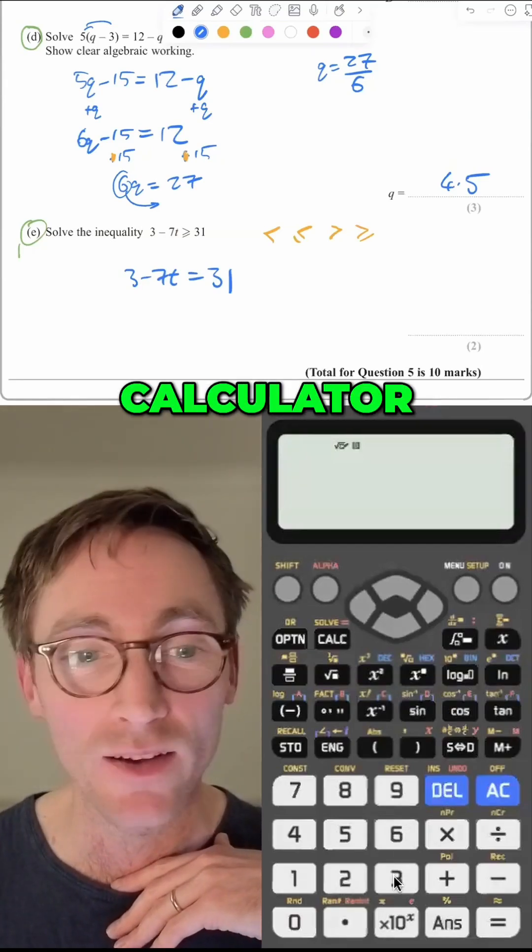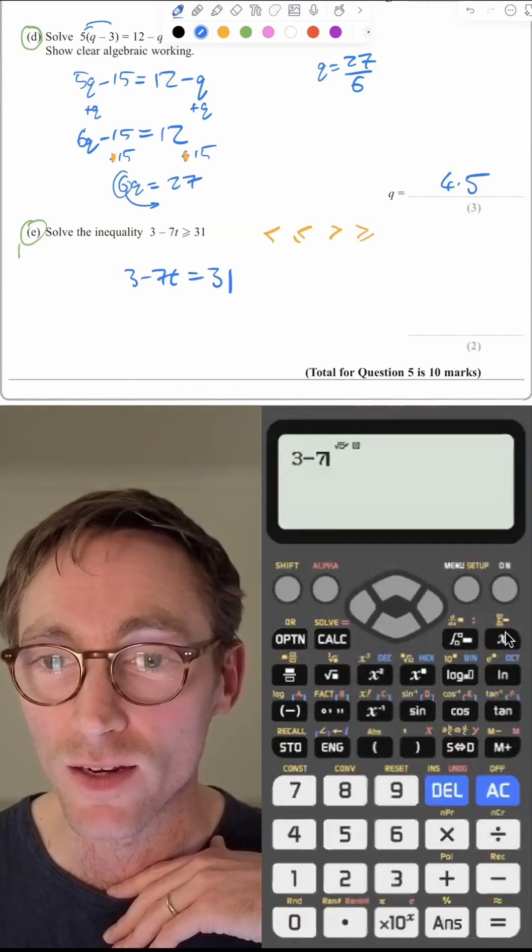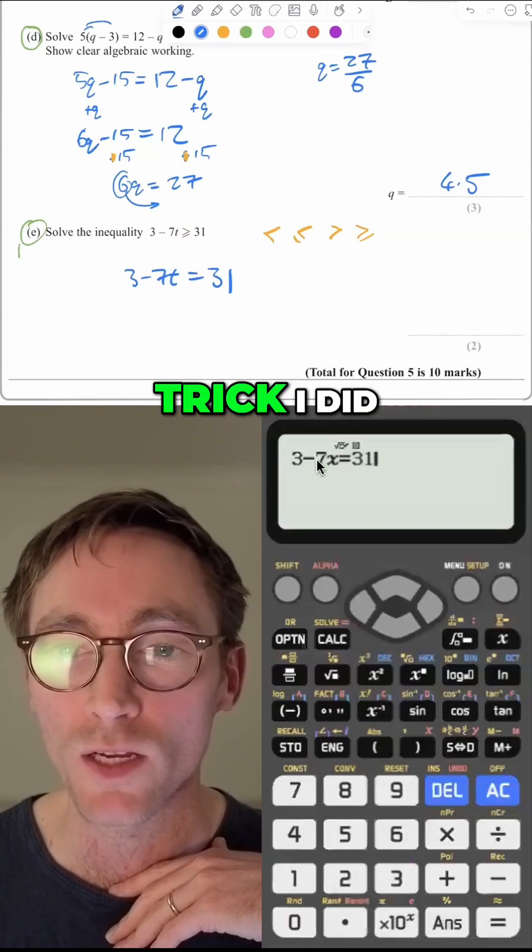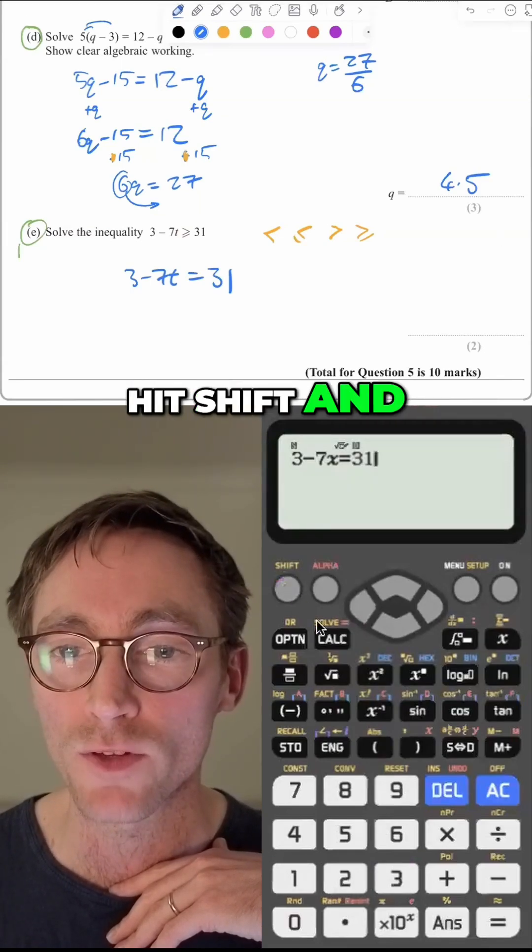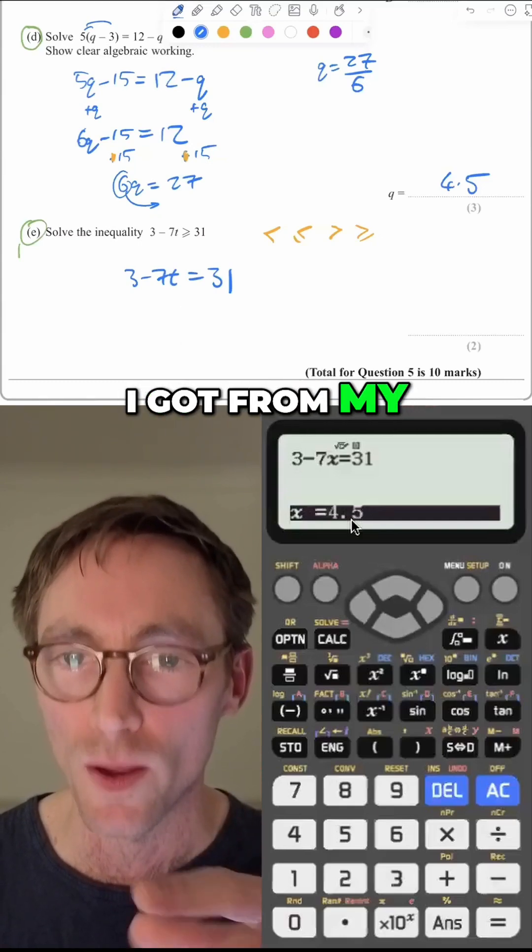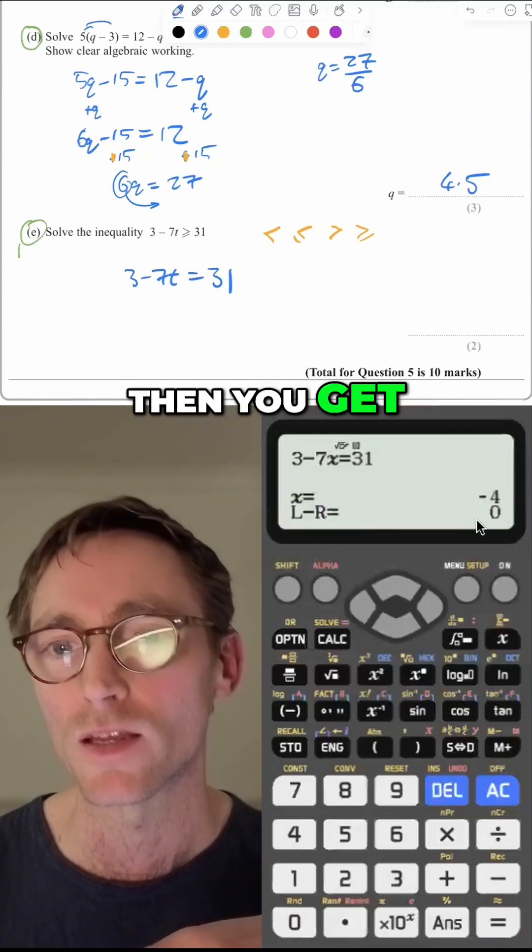And now you can go and use your calculator. You could go back and do this: 7 minus x equals 31. This is the same trick I did before. I'm just going to hit shift and solve. And that's not my answer. See, that's the x value that I got from my previous question. Then you hit equals. Then you get the answer minus 4.